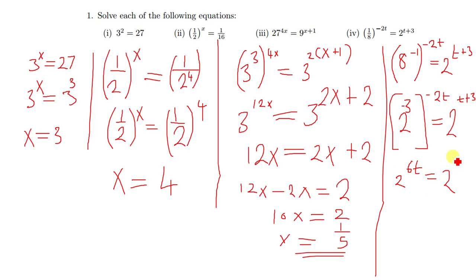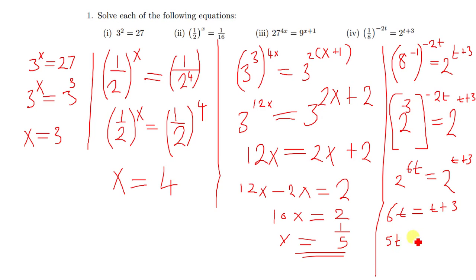Since the bases are the same, the exponents are also the same, so 6t is equal to t plus 3. Taking t to the other side, we get 6t minus t, which gives 5t equal to 3. The value of t is therefore 3 over 5. That's our value of t. Let's quickly move on to question 2.